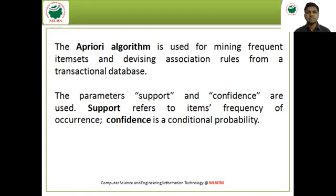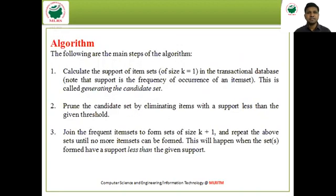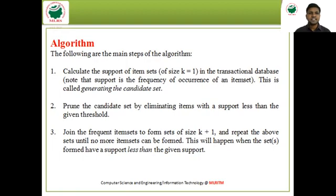Now I want to give the steps of the algorithm before discussing the example. The following are the main steps: First, calculate the support of item sets of size k=1 in the transactional database. Support is the frequency of occurrence of an item set. This step is called generating the candidate set.